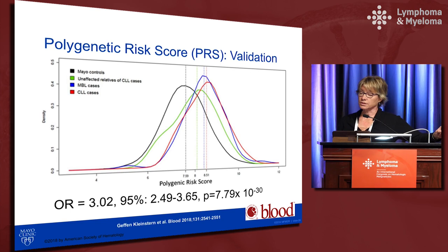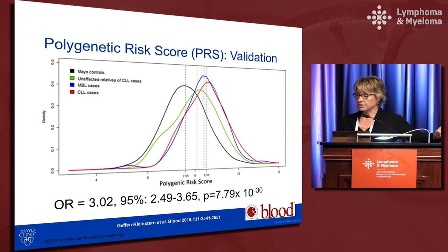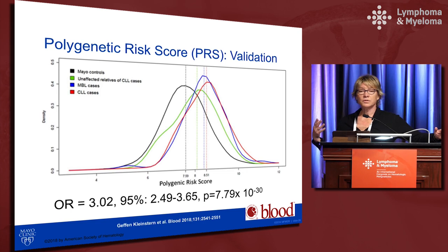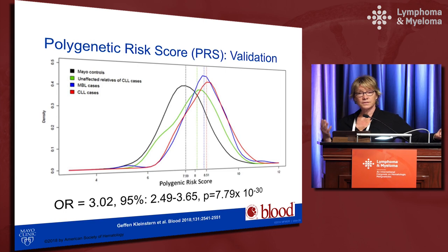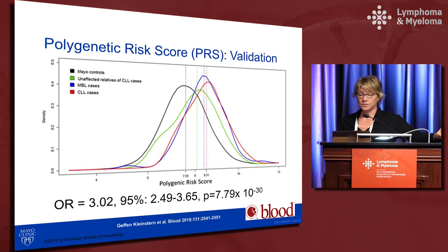Looking at CLL families — families with two or more members with CLL — the unaffected first-degree relatives also show a distribution of inherited variants significantly higher than controls, meaning relatives who don't yet have CLL (and may never get it) already carry more risk variants. Family members screened for MBL, the precursor to CLL, showed an even larger number of inherited variants, with their distribution nearly overlapping that of CLL cases, suggesting inherited CLL variants also increase risk of monoclonal B-cell lymphocytosis.